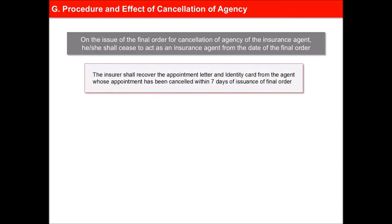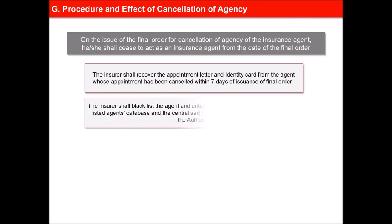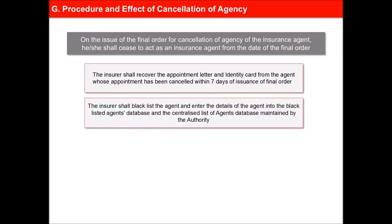The insurer shall recover the appointment letter and identity card from the agent whose appointment has been cancelled within seven days of issuance of the final order. The insurer shall blacklist the agent and enter the details of the agent into the blacklisted agent's database and the centralised list of agent's database maintained by the authority.